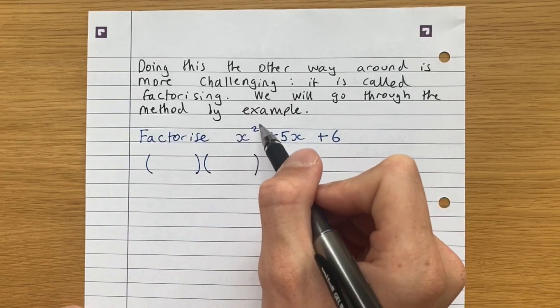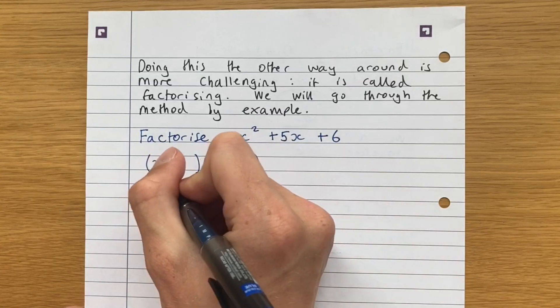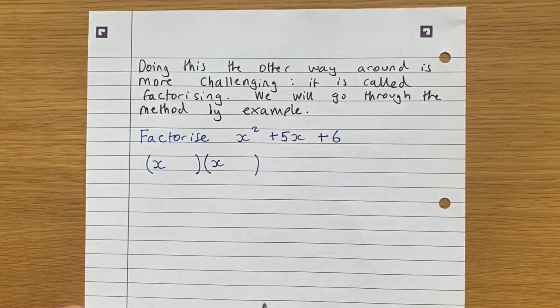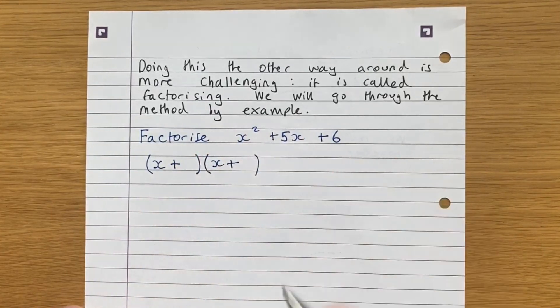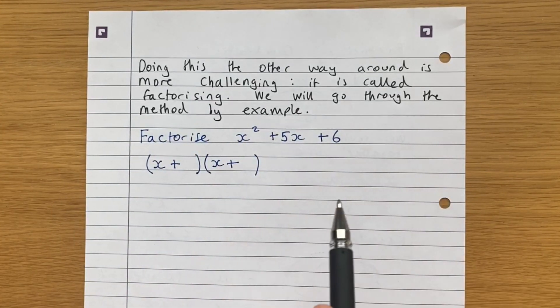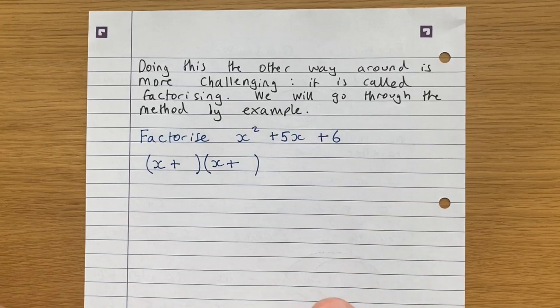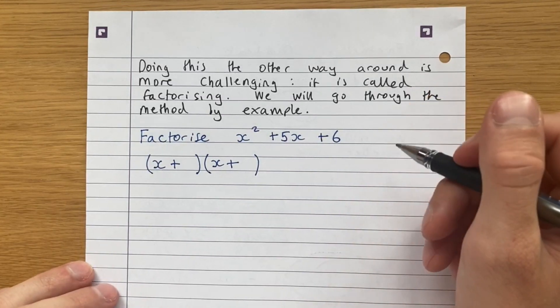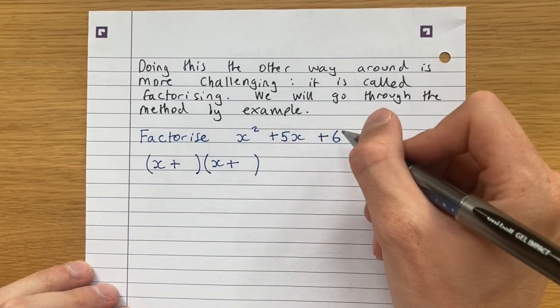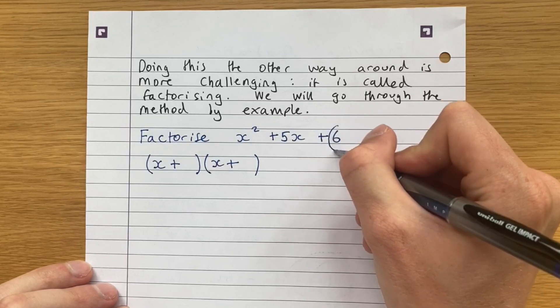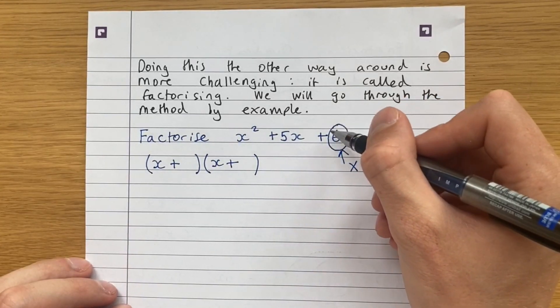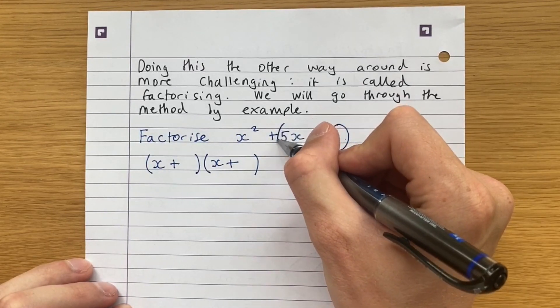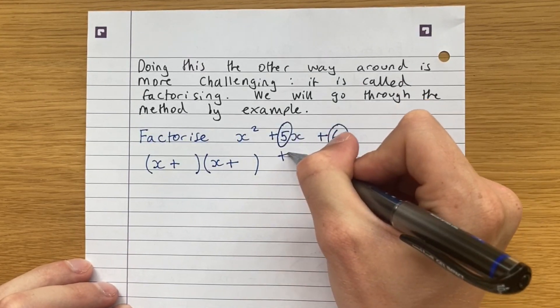So in other words, we want it in this form. Now, because we only have one lot of x squared, we can safely just put x's at the beginning. And because there's only plus signs, we can safely put plus signs next to those x's. When you're doing factorisations like this, what you're aiming for is two numbers that multiply together to give the constant on the end. So two numbers that multiply together to give you 6. Those same two numbers that add together to give you 5.